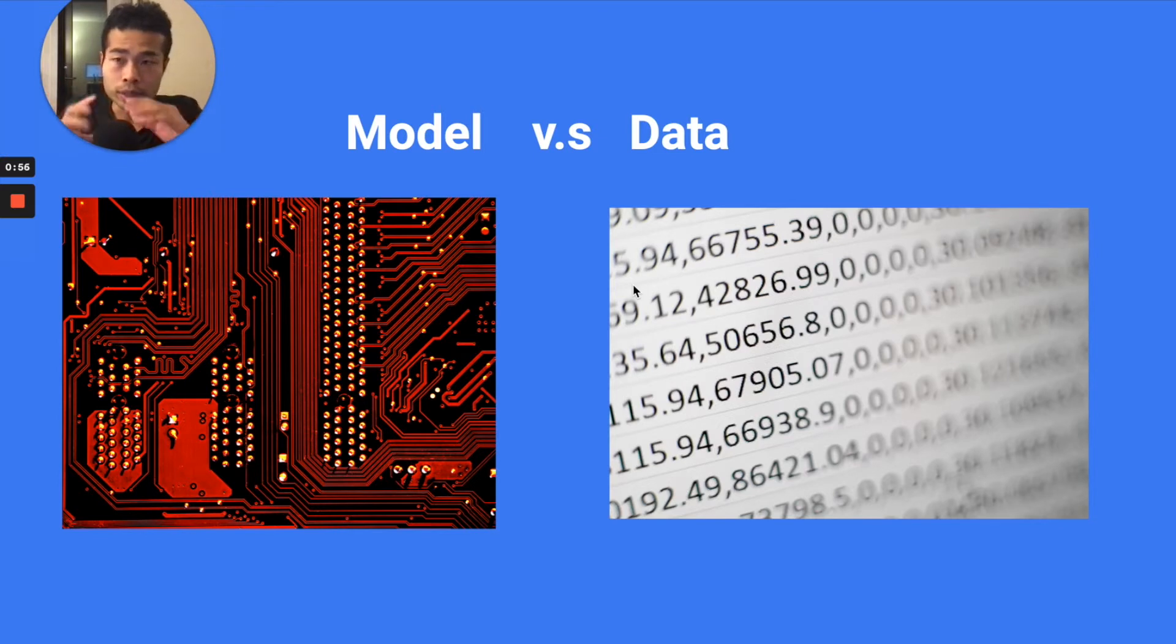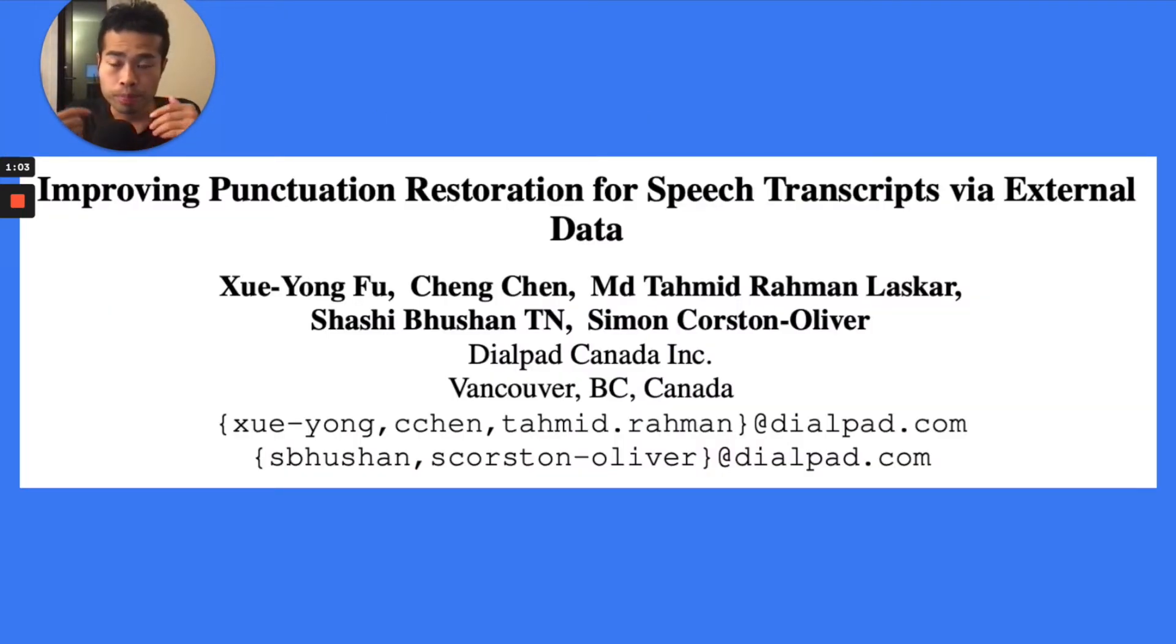So today's paper, it's actually very practical. We want to talk about how to use some sampling technique to sample data from an external source. The data is similar to your in-domain data, so that you can improve your model for your in-domain tasks.